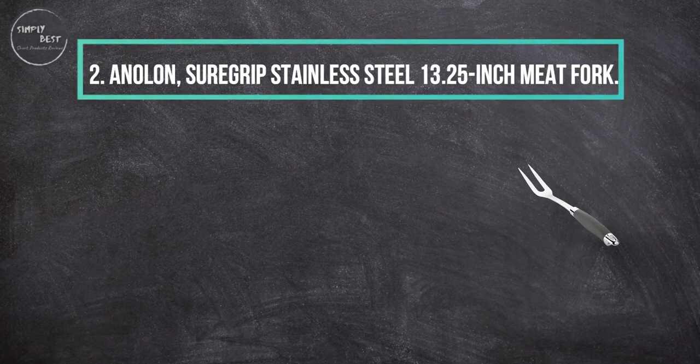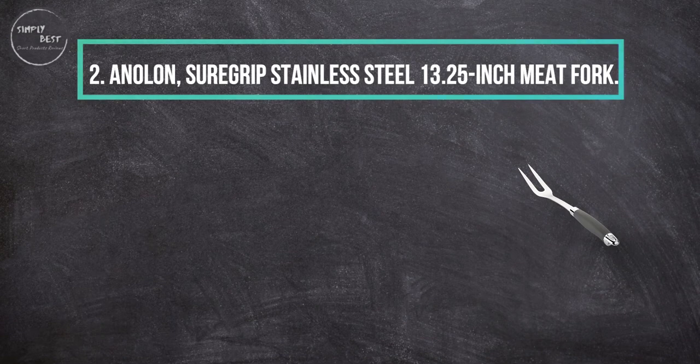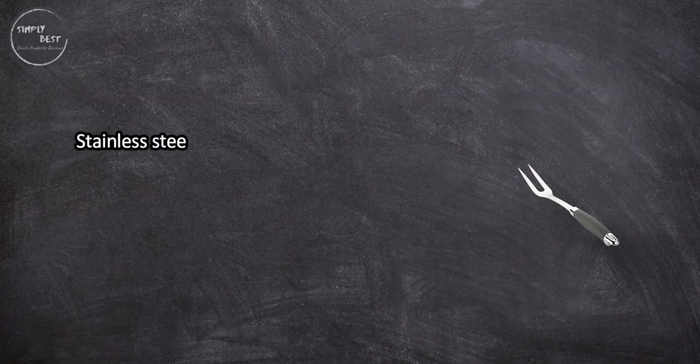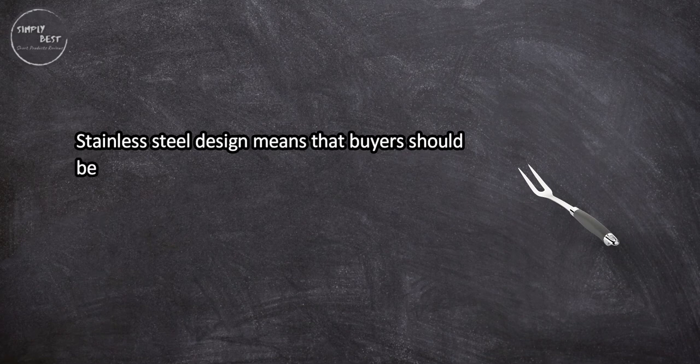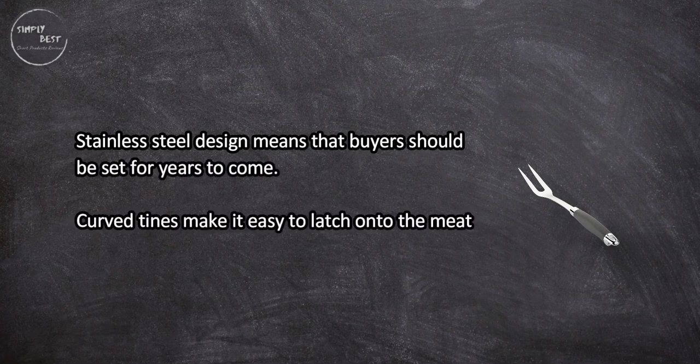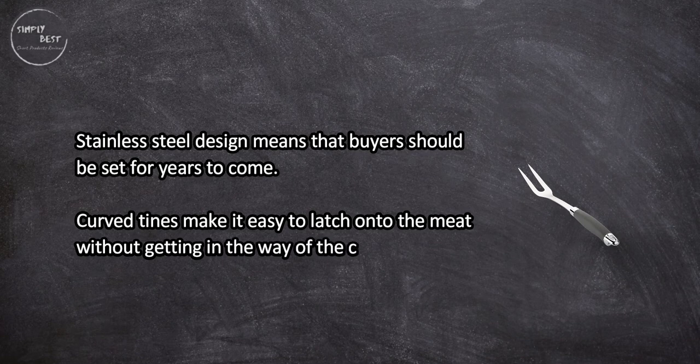13.25 inch Meat Fork. Stainless steel design means that buyers should be set for years to come. Curved tines make it easy to latch onto the meat without getting in the way of the carving knife. Built to withstand heat.